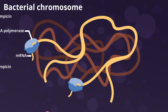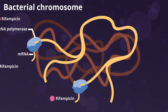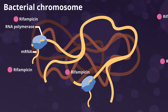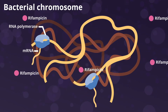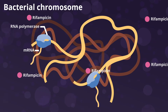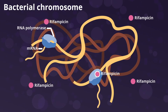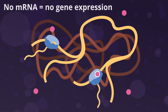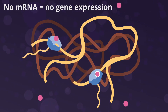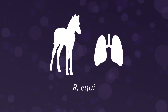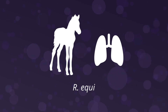Rifamycins don't damage DNA directly, but inhibit bacteria from transcribing sections of DNA to messenger RNA by disrupting the enzyme RNA polymerase. This essentially shuts down gene expression so bacteria can't conduct their normal cellular functions. Rifampicin is an example from this class that is used in veterinary medicine in specific circumstances, such as Rhodococcus infections in foals.